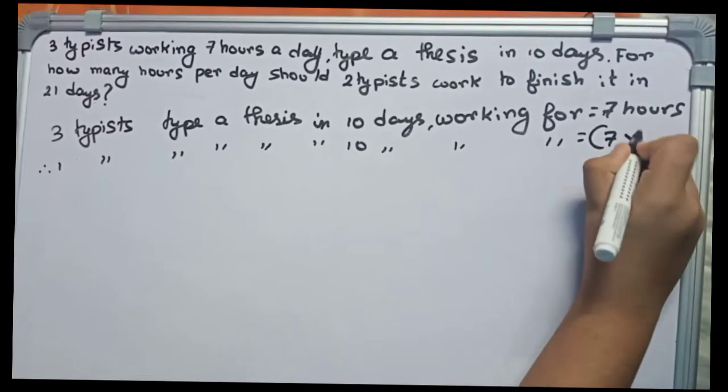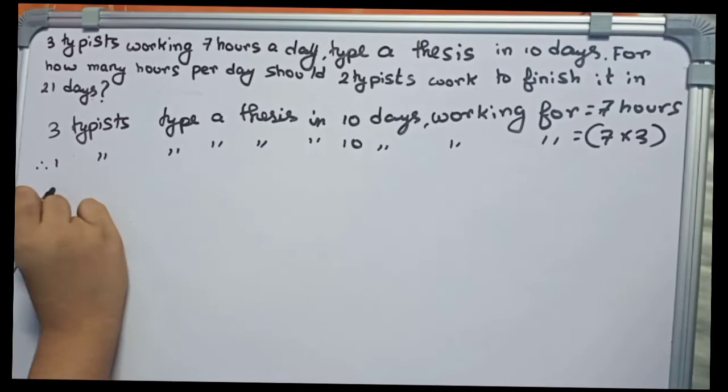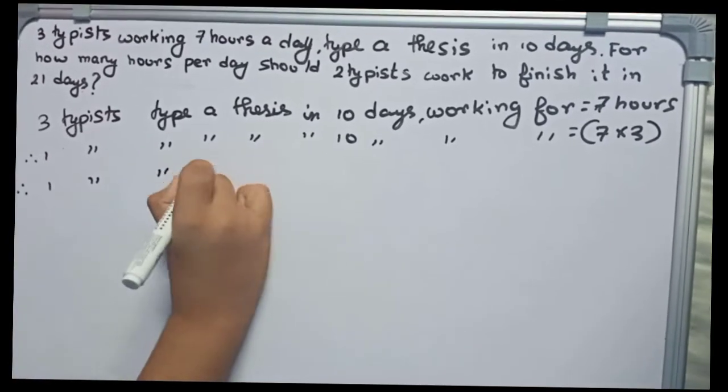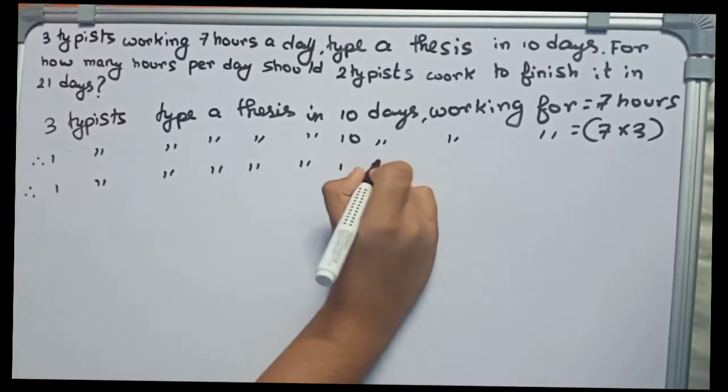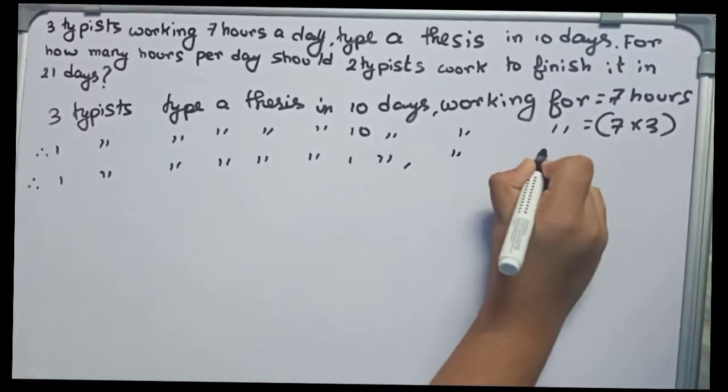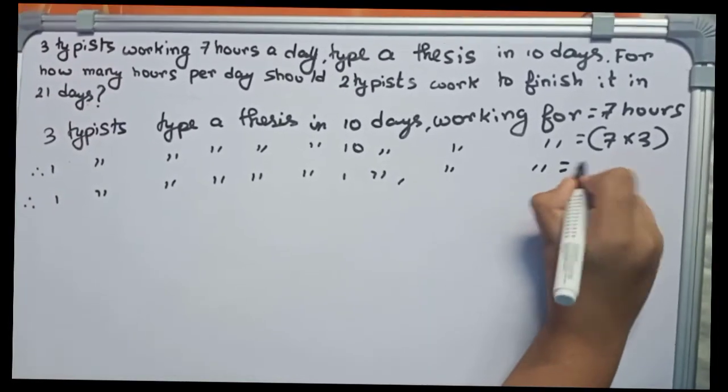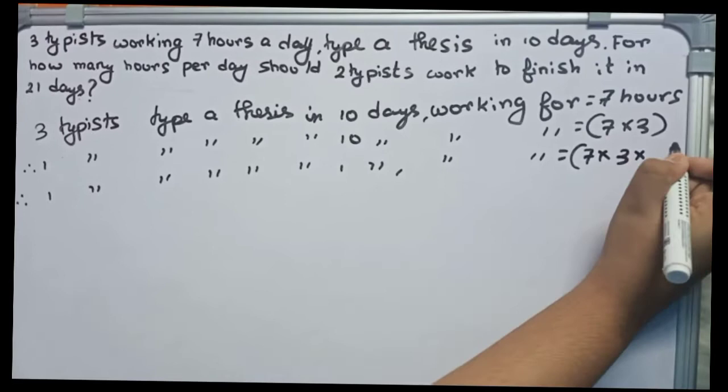So now we write: one typist types a thesis in one day working for—it will take more time—seven into three into ten hours.